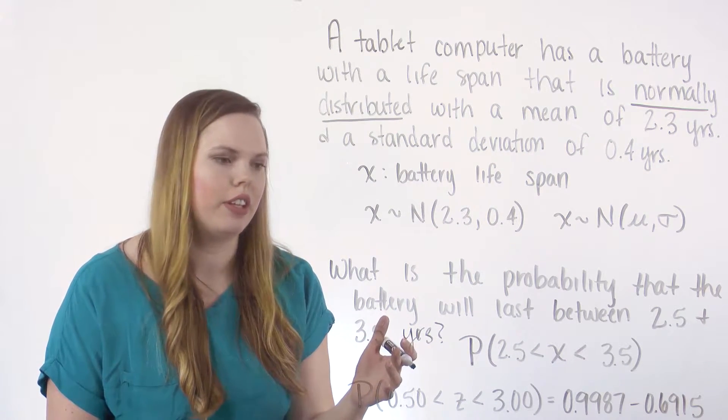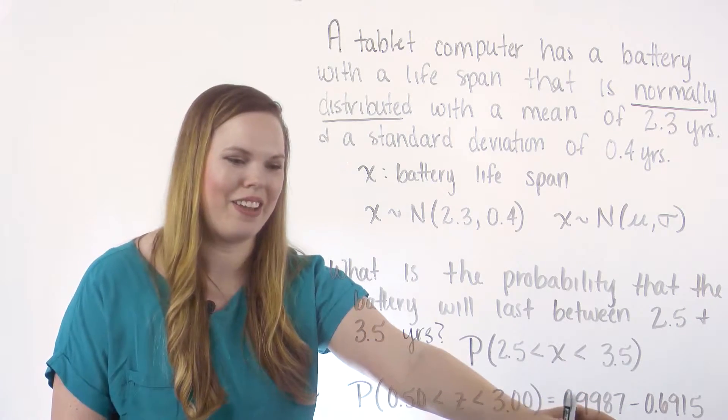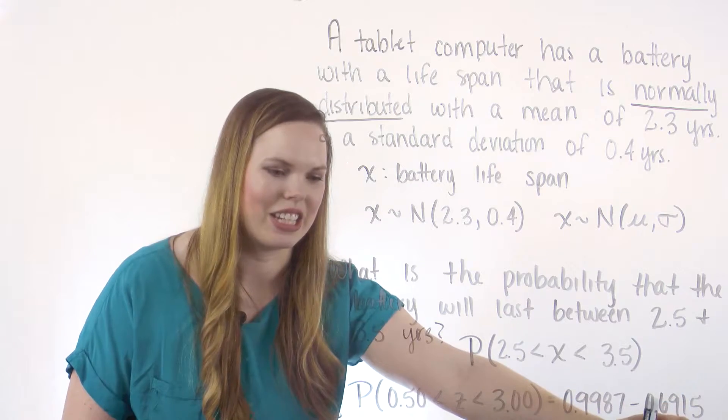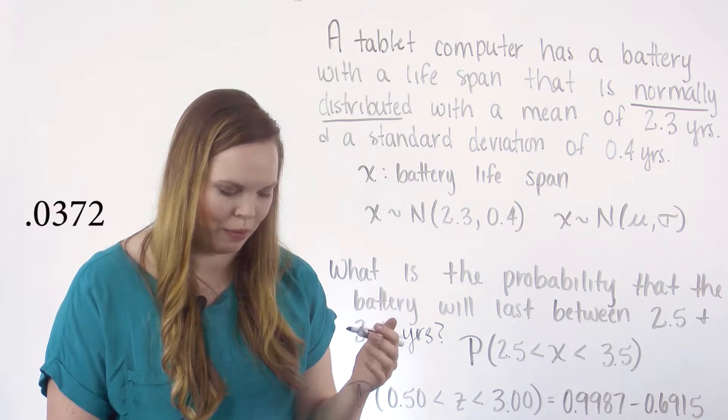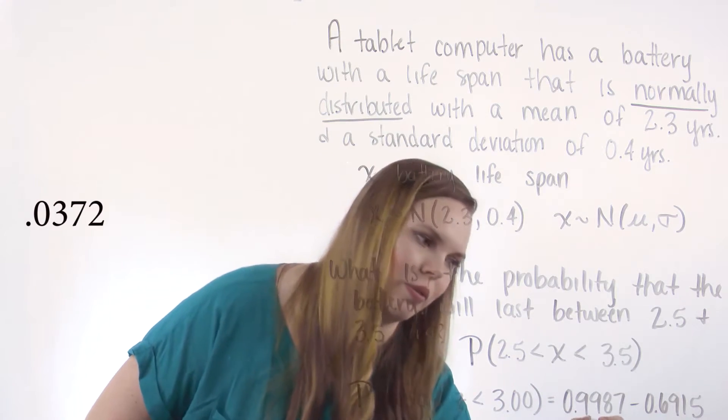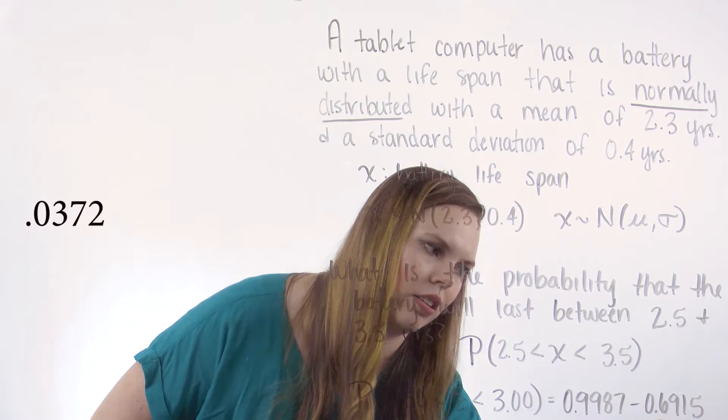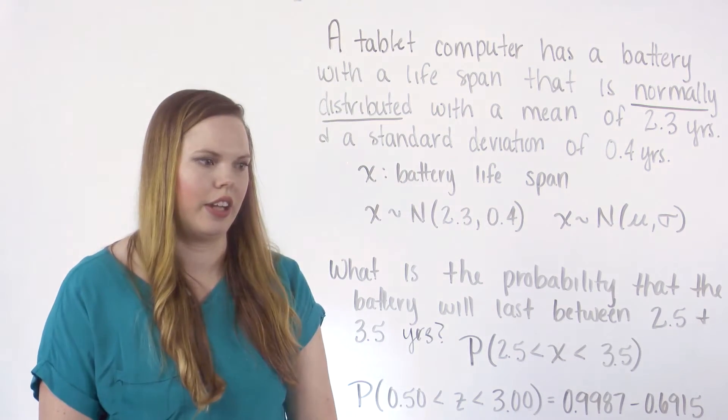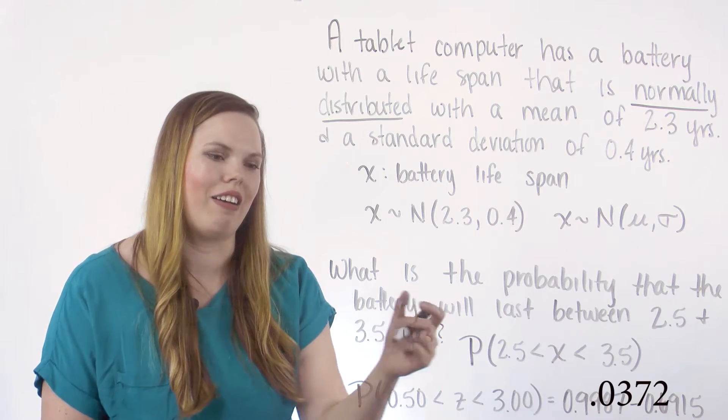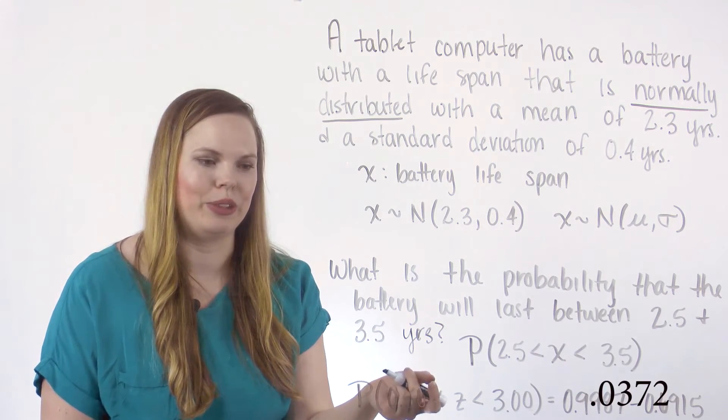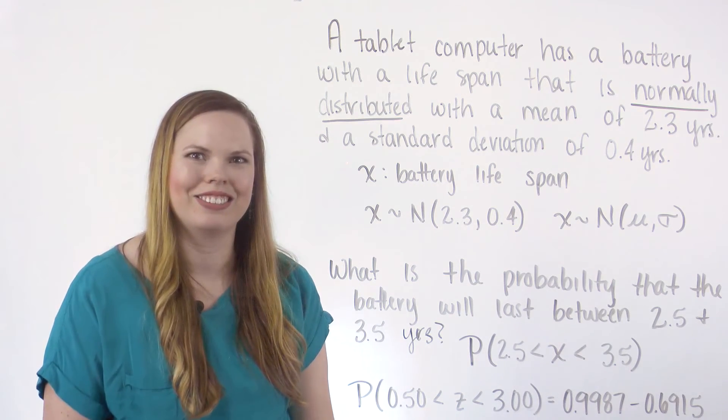So you do the subtraction. Don't do any weird subtracting from 1. Just simply the area to the left of 3, the area to the left of 0.5, do the subtraction and you get 0.3072. And so this is the probability that our battery is going to last between two and a half and three and a half years.